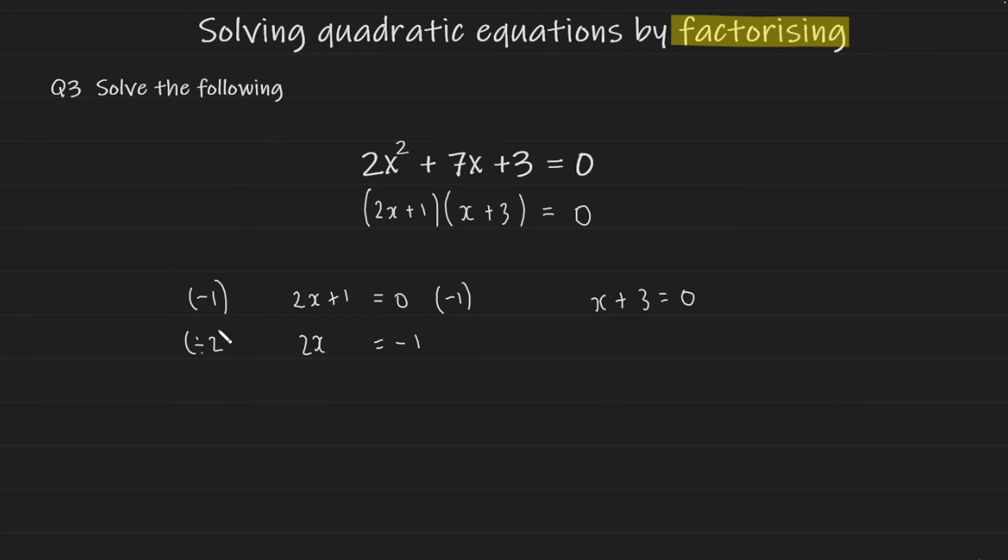Now I'm going to divide both sides by 2 and this gives us x is equal to minus a half. So that's our first solution and now to solve this equation here. To get the second solution I'm going to subtract 3 from both sides and this is going to leave us with x is equal to negative 3.